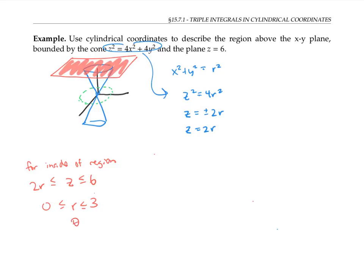Theta can be absolutely anything, but I'll bound it by zero to 2π to get all the way around without redundancy. So these three equations describe our region in cylindrical coordinates.